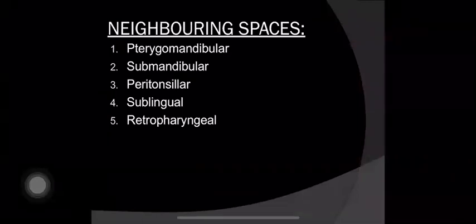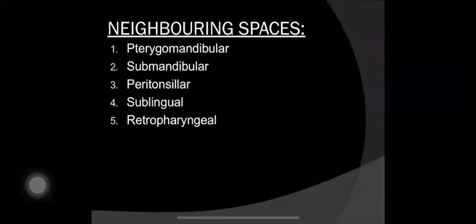Neighboring spaces: The spaces that lie around the lateral pharyngeal space are the pterygomandibular space, submandibular space, peritonsillar space, sublingual space, and retropharyngeal space.